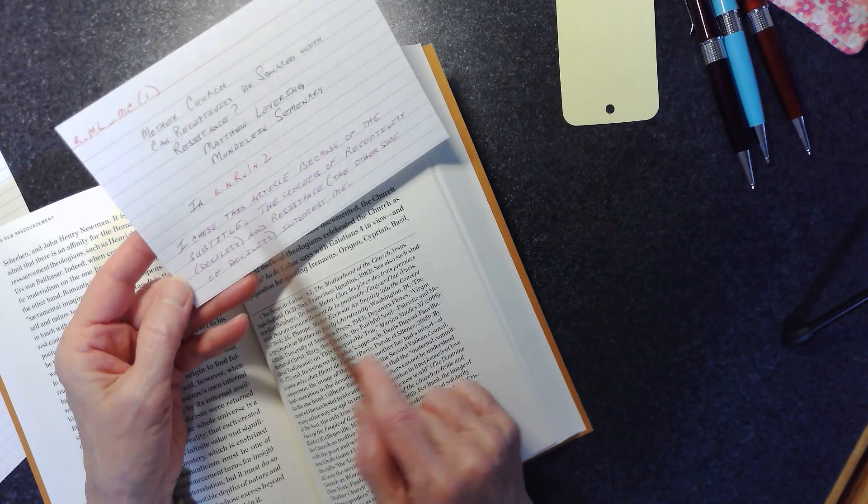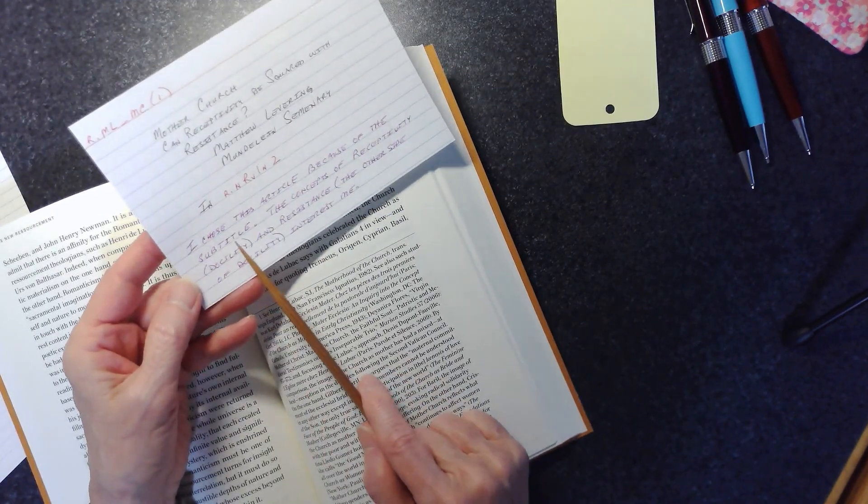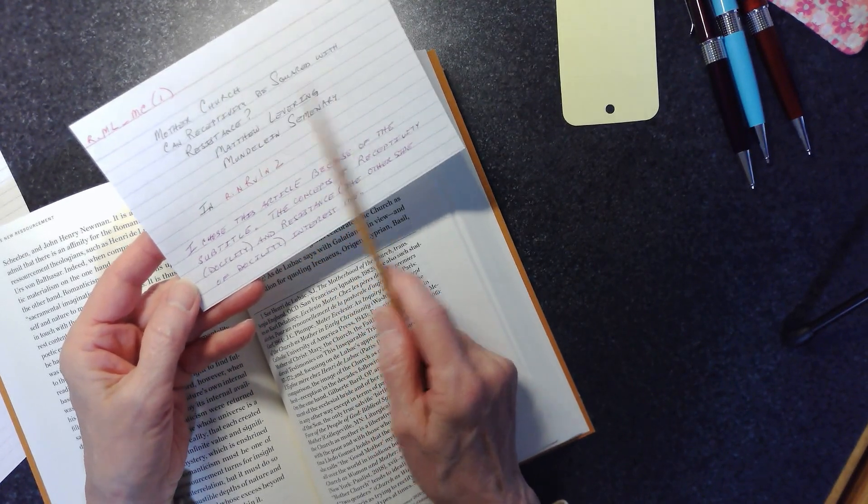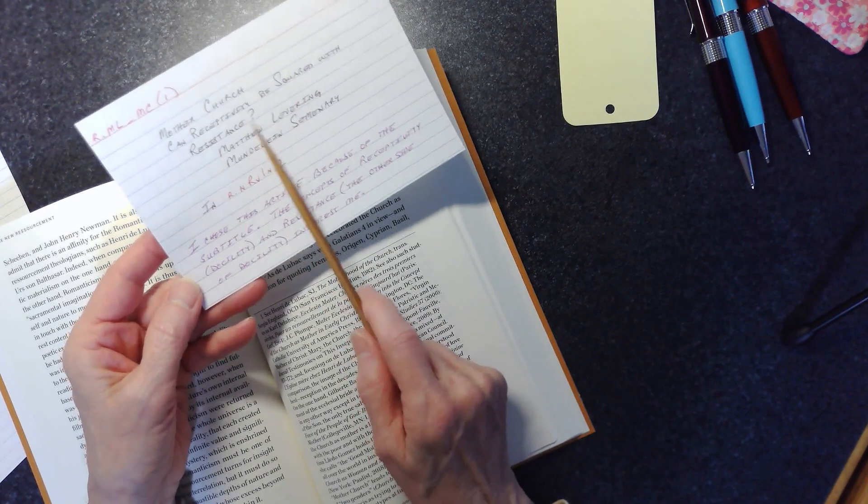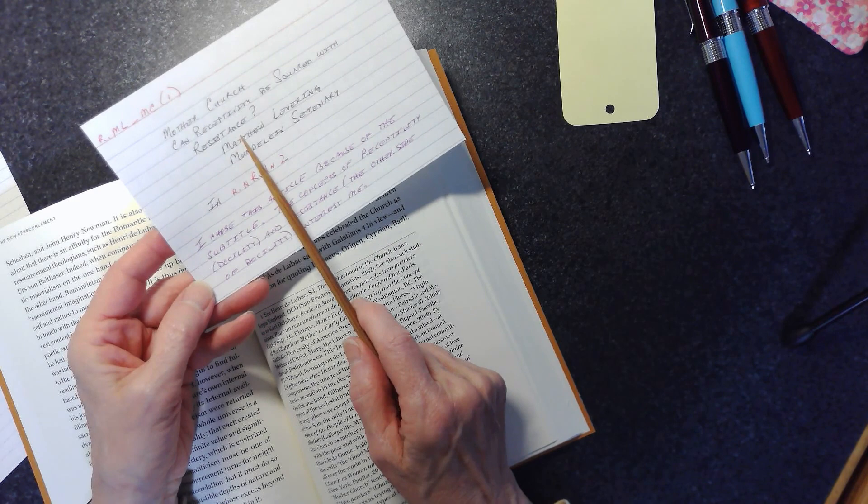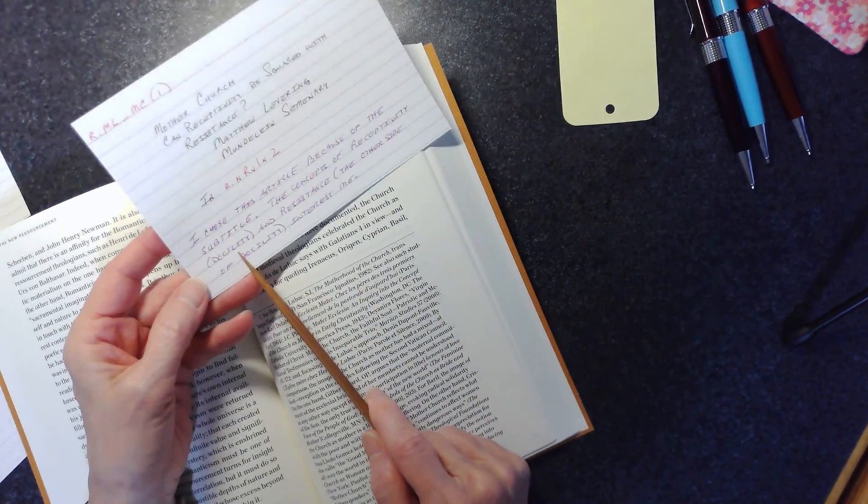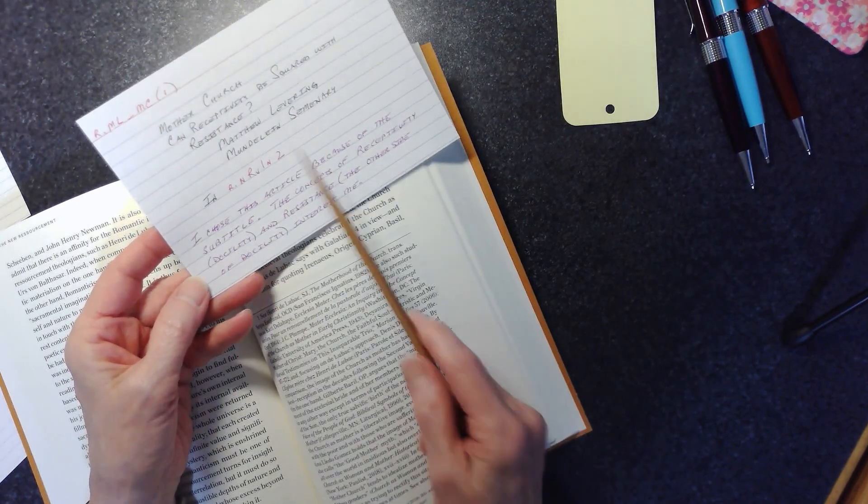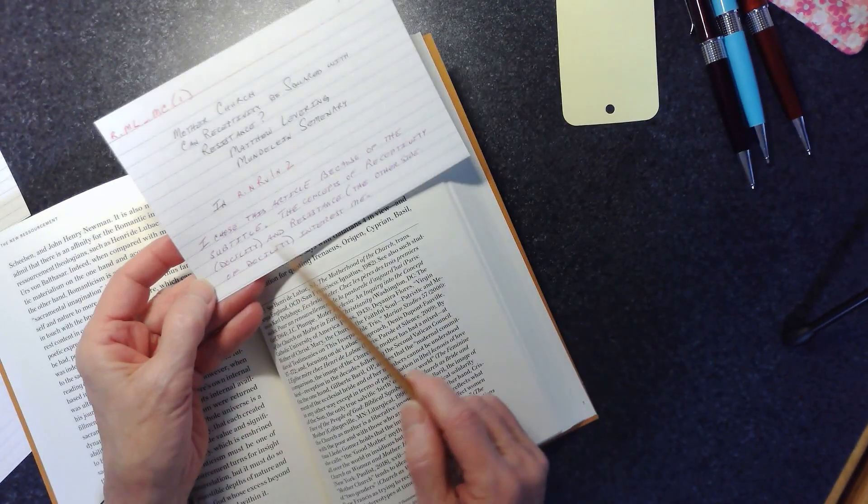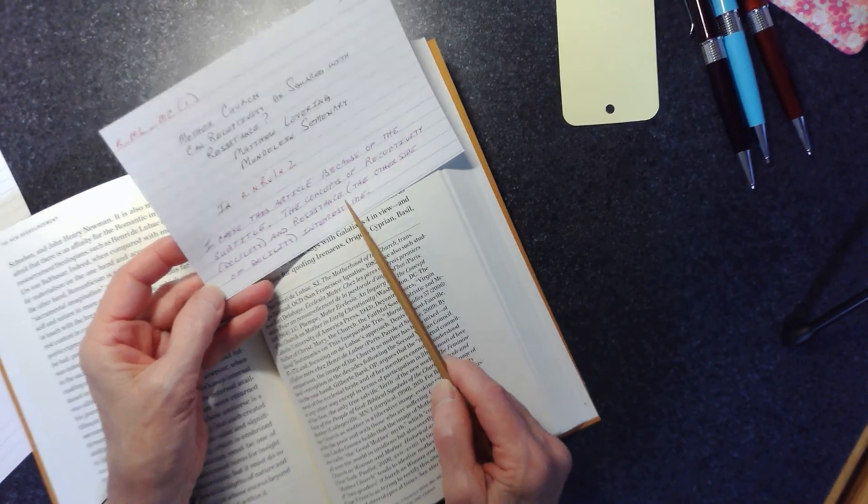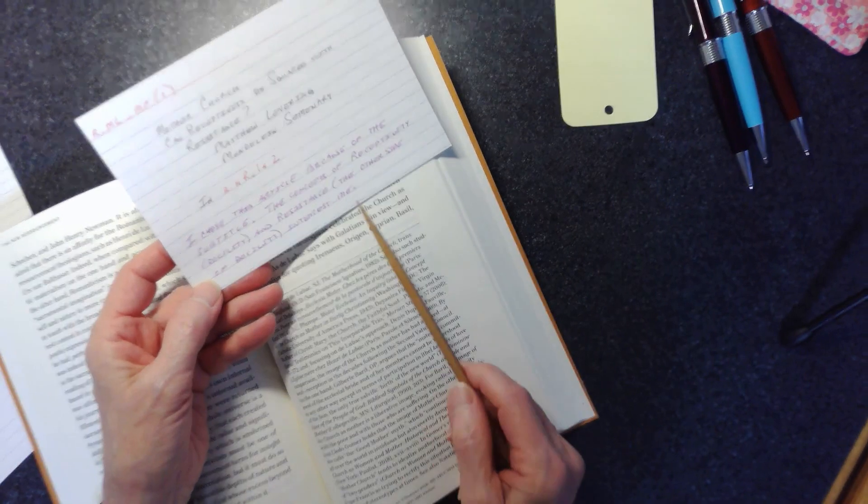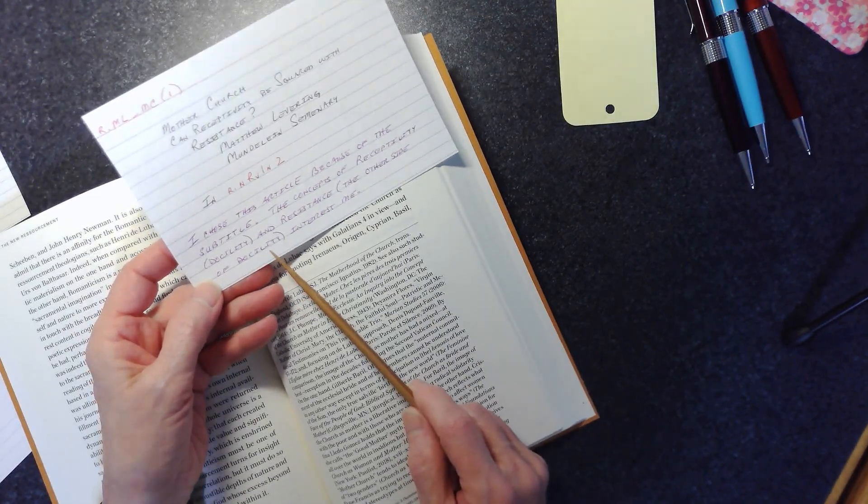In this case, I chose to read this article because of the subtitle: Can receptivity be squared with resistance? Now, that's a very interesting concept for me because in my world of character traits, that receptivity would be the character trait of docility and the resistance would be the other side of docility in the struggle to and from docility. And so I wanted to see where that would show up, especially in this article. So I identified that as my reason.